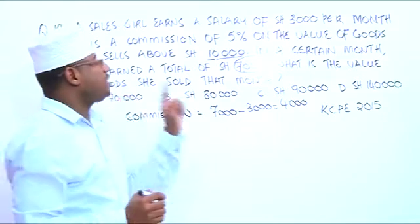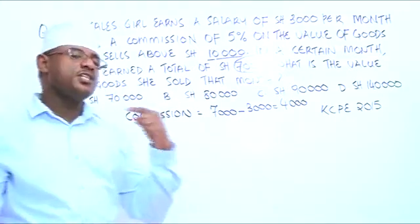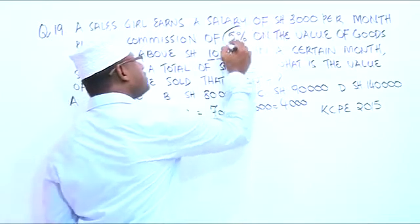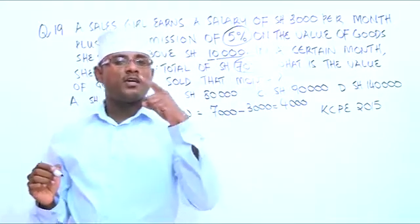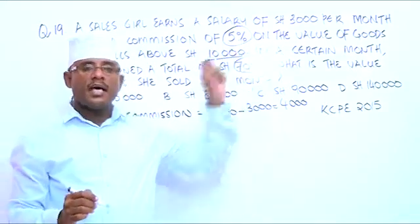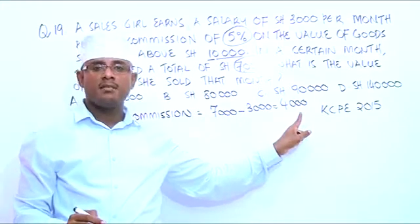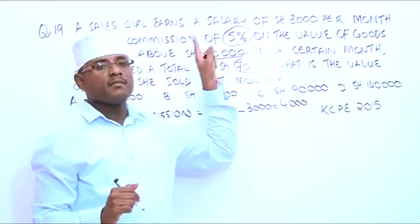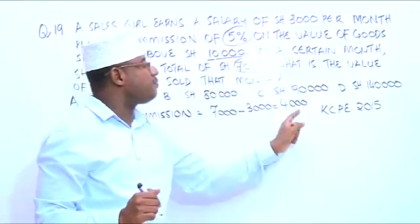The question also tells us that the commission rate is 5%. Now we have commission in terms of percentage, and we also have commission in terms of money — in terms of the amount. Meaning, 5% is equal to $4,000.